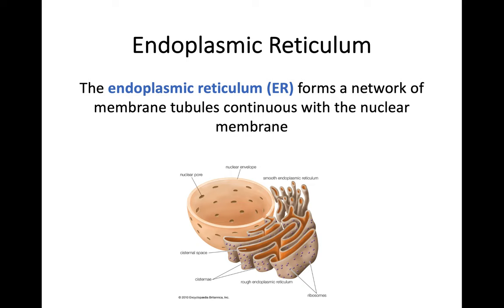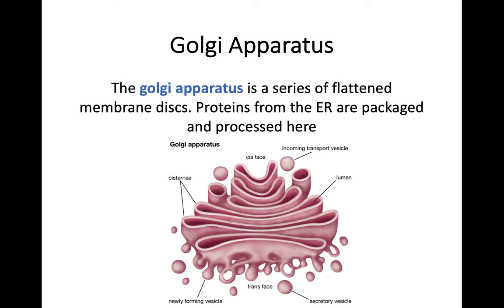To start off with, you may have noticed there are two organelles with a similar name. Both are called endoplasmic reticulum, and we abbreviate that to ER. There are two forms of them that we'll speak about in a minute. You can see there's a network of membrane tubules that go on from the nuclear membrane. In this image we have a nuclear membrane containing the nucleus in the middle, and then right attached to it, this part flowing outside it is the entire endoplasmic reticulum.